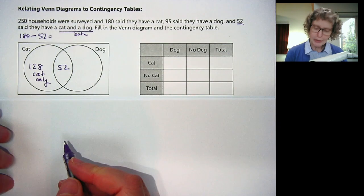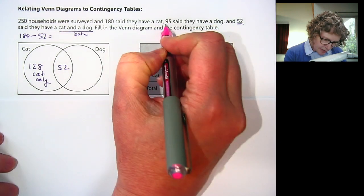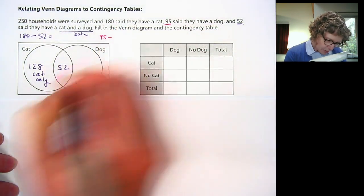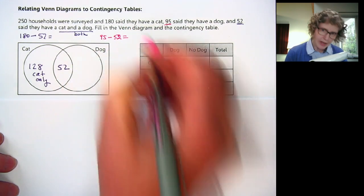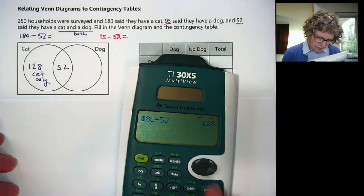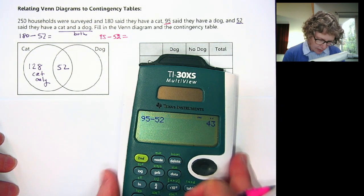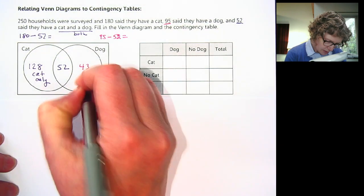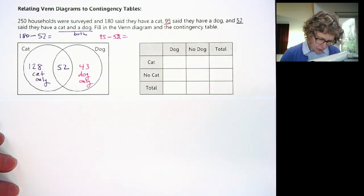Now for the dog owners: 95 said they have a dog, but we know 52 also have a cat. So let's subtract that. 95 minus 52 is 43.